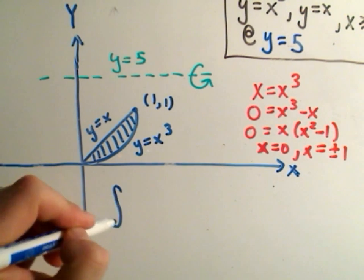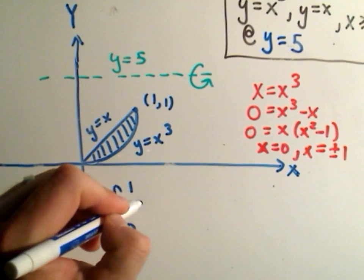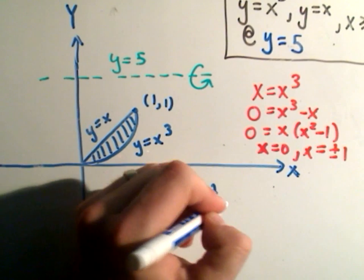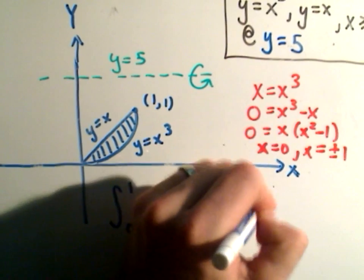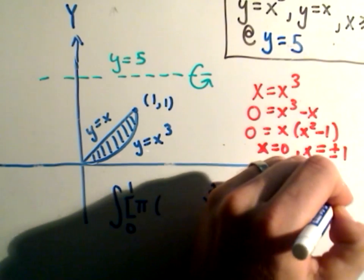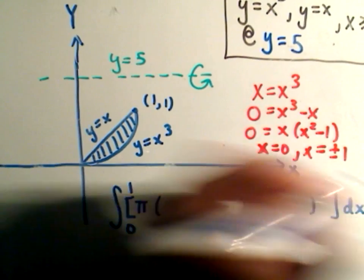So just like in the last couple, our limits of integration will be from 0 to 1. And again, now we have to take pi times the outer radius squared minus pi times the inner radius squared. And then we integrate that with respect to x.